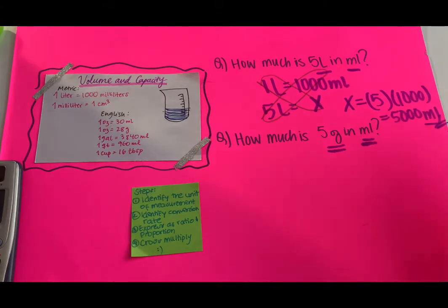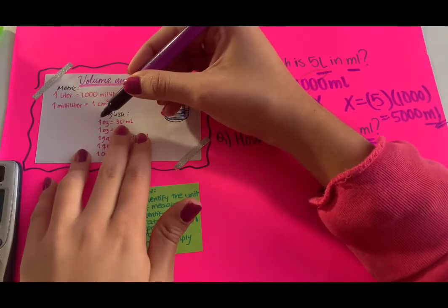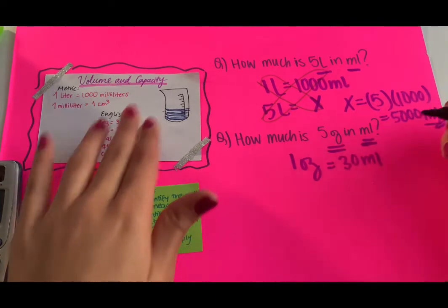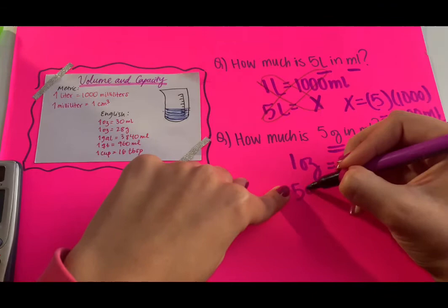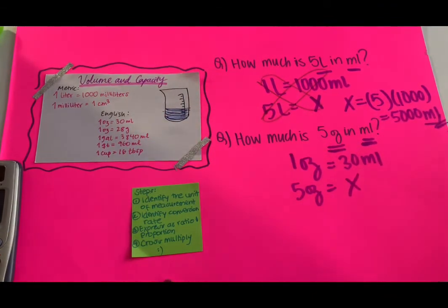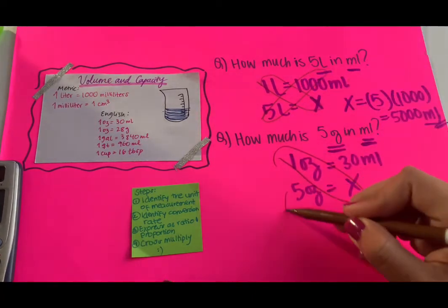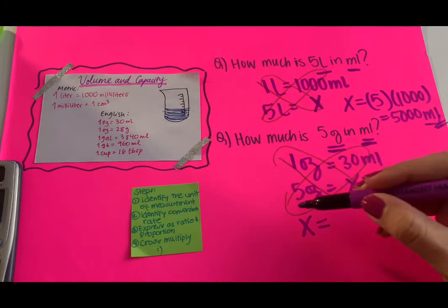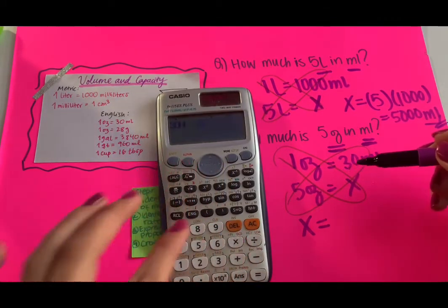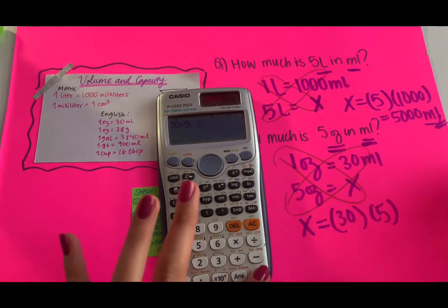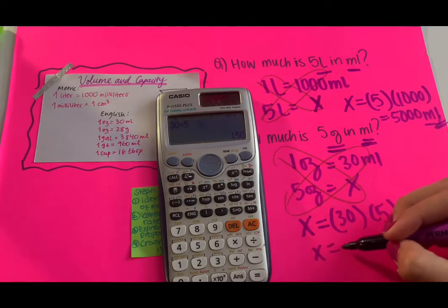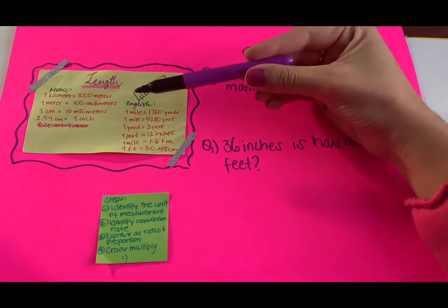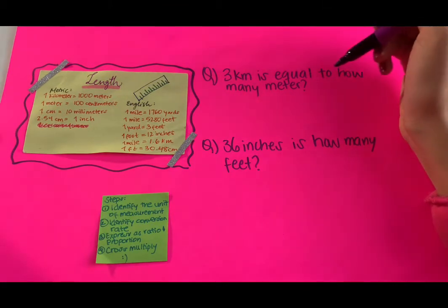The next one: how much is 5 ounces in milliliters? We identify the units and find the conversion rate: one ounce equals 30 milliliters. We have 5 ounces on the left side and x for milliliters. Cross multiply: 1 times x is x, and 30 multiplied by 5 — bring your calculator — is 150 milliliters.